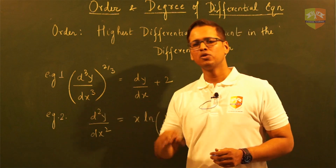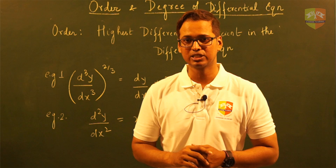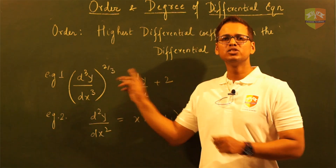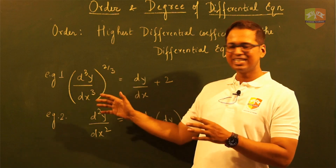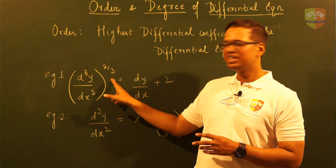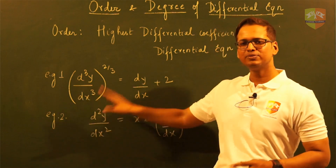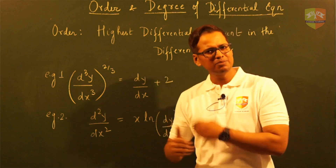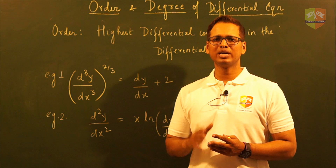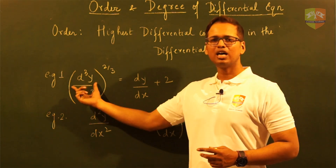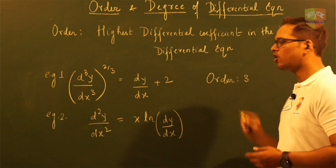This means y has been differentiated a maximum number of 3 times with respect to x. Please note, this power has no relevance while deciding the order of the differential equation. Do not take into account that since there is a power of 2/3, it should become a d²y by dx². That doesn't happen. In this case, the order is nothing but the maximum number of times the derivative of y has happened with respect to x in that equation. So this is an order 3 differential equation.